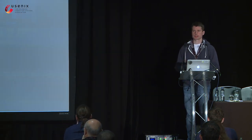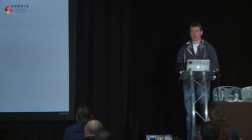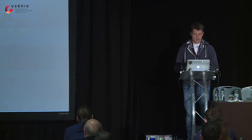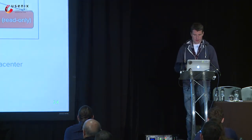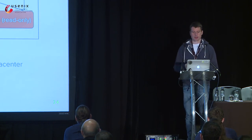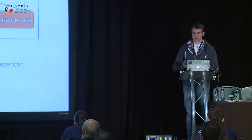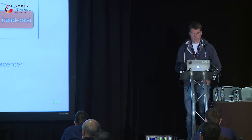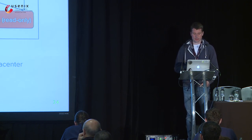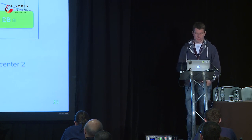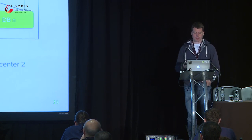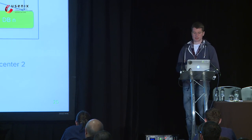We now have two data centers, but one of them is sitting there burning power doing nothing. The red boxes — those servers are not serving traffic. The web workers and job workers I call the stateless tier because they're not storing any data, just CPU power. And 50% of our stateless CPU is wasted. What we actually wanted is something where the databases are still only active in one data center at a time, but we can utilize the entire stateless tier.